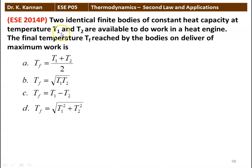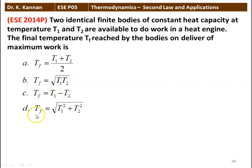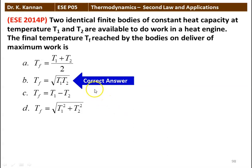Next question: two identical finite bodies at constant heat capacity at temperatures T1 and T2 are available to do work in a heat engine. The final temperature Tf reached by the bodies on delivery of maximum work — options are (T1+T2)/2, √(T1·T2), T1−T2, or √(T1²+T2²). The correct answer is Tf = √(T1·T2). You may refer to the theory video lecture for the proof of this equation.